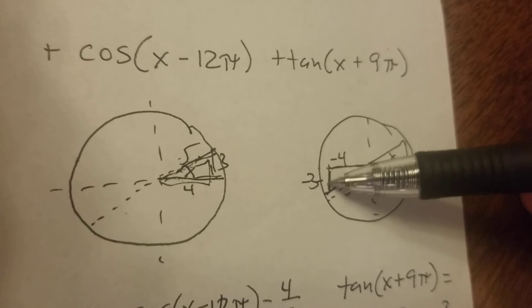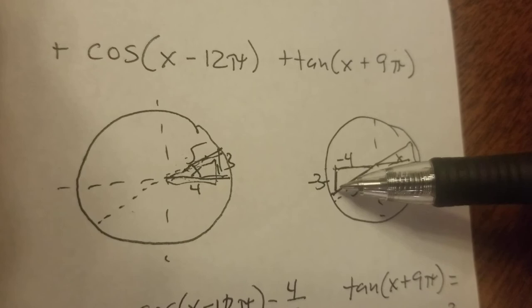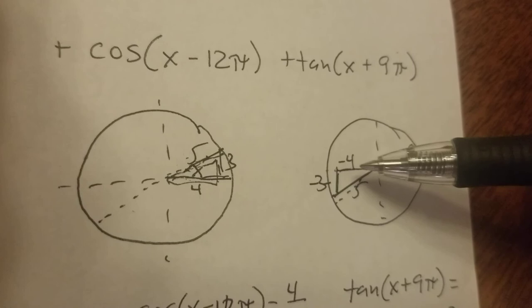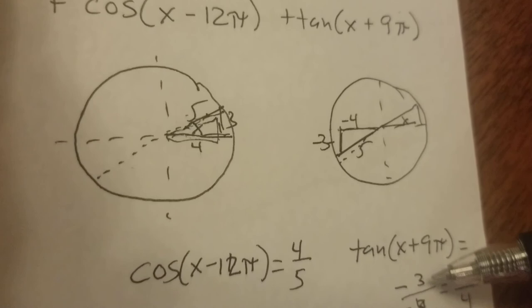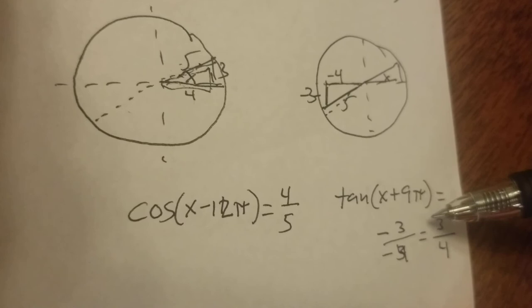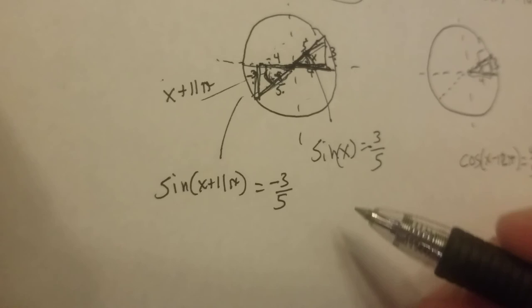So it's tangent, so tangent is the opposite over the adjacent. So it's minus 3, because we're going down, and this is minus 4, because we're going that way. So the tangent of this angle over here, x plus 9 pi, is minus 3 over minus 4. And the minuses cancel each other out, so it's just 3 over 4. It doesn't look like a 4, but I didn't draw it very good.